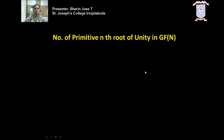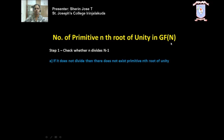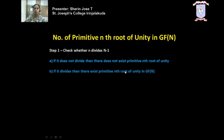Let us go to the steps. The first step is to check whether n divides n minus 1. Using the given n, you have to find whether n divides n minus 1. If it does not divide, then there does not exist a primitive nth root of unity. If it does divide, then there exists a primitive nth root of unity. So from this first step you can decide whether a primitive nth root exists or not.